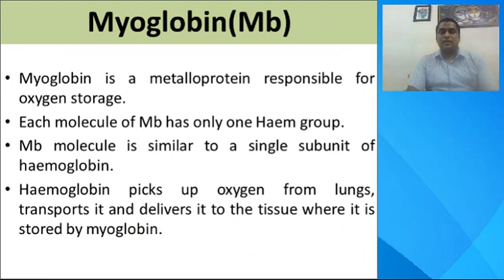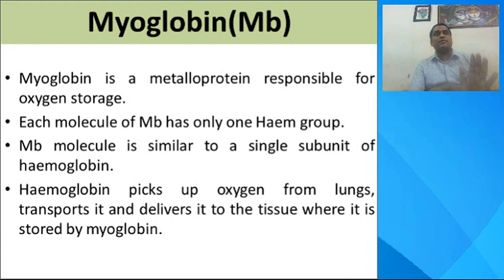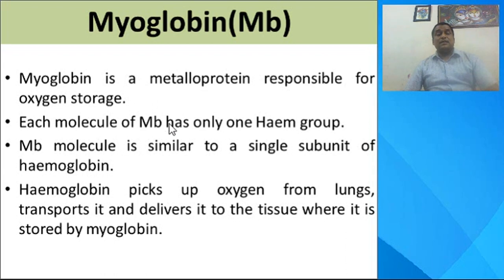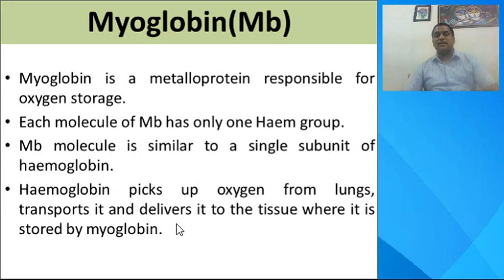Now let us talk about myoglobin. Unlike hemoglobin, which is a tetramer, myoglobin is a monomer — a metalloprotein. While hemoglobin is responsible for oxygen transport, myoglobin acts as an oxygen storage protein. Structurally, myoglobin is a monomeric analog of hemoglobin, containing only a single heme subunit. Hemoglobin picks up oxygen from the lungs, transports it, and delivers it to the tissues where it is stored by myoglobin.